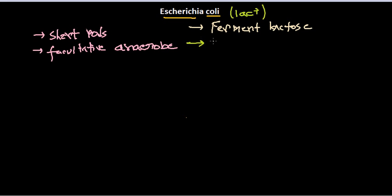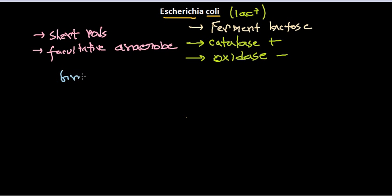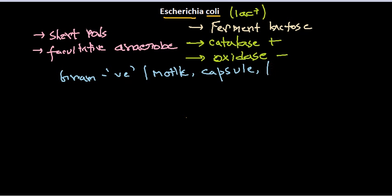They are catalase positive — you can find what catalase is in my previous videos in this bacteriology session. They are oxidase negative. Definitely they are gram-negative; I should have mentioned that earlier. Escherichia coli is a gram-negative organism. They are also motile with their flagella, and they have a capsule layer — a slimy layer coating the whole bacteria. We can culture them on MacConkey agar, which is a special kind of medium, pretty easily.